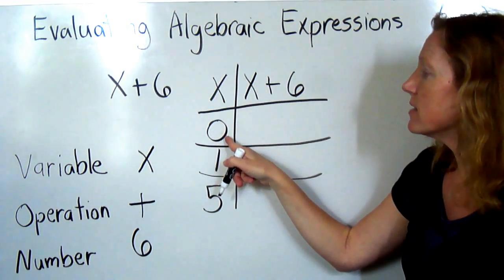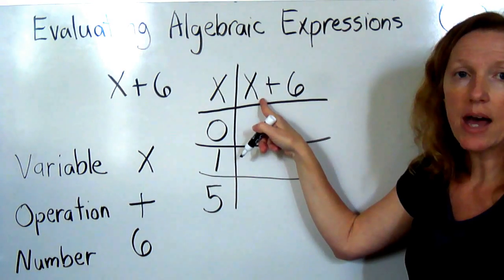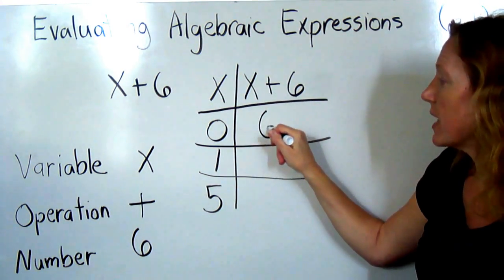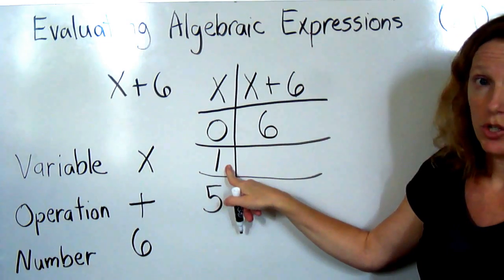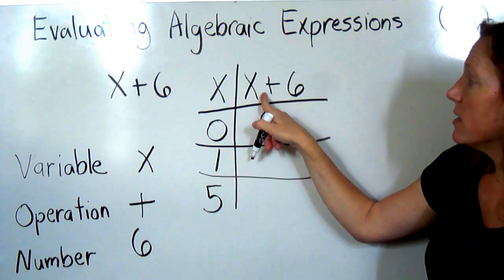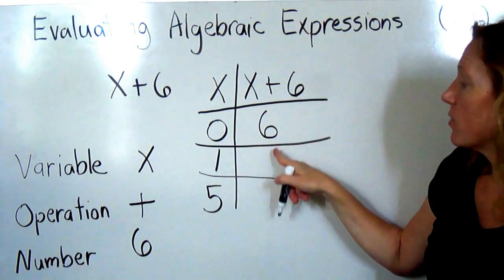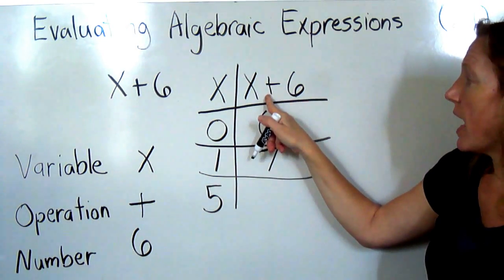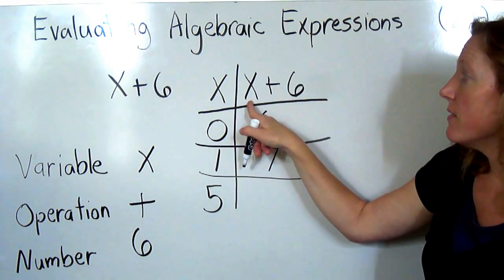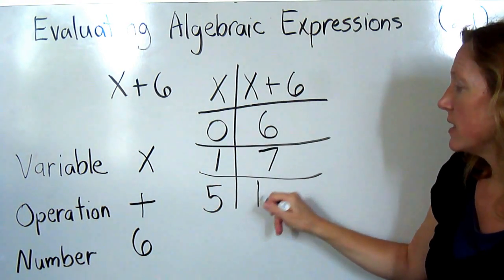If x is 0, I substitute in the 0 for the x, and I add 0 plus 6, which would be 6. Let's substitute 1 in for the x. That would be 1 plus 6 equals 7. And for the last value, we're going to test 5. 5 plus 6 is 11.